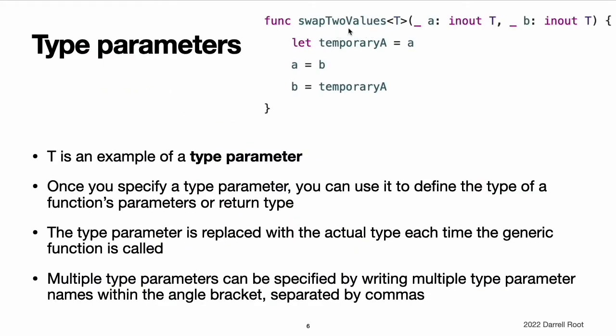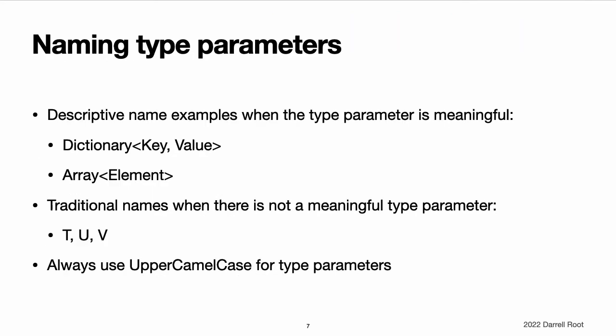Type parameters. In the swapToValues example, the placeholder type T is an example of a type parameter. Type parameters specify and name a placeholder type and are written immediately after the function's name between a pair of matching angle brackets. Once you specify a type parameter, you can use it to define the type of a function's parameters, such as the a and b parameters of the swapToValues function, or as the function's return type, or as a type annotation within the body of the function. In each case, the type parameter is replaced with an actual type whenever the function is called. In the swapToValues example, T was replaced with int the first time the function was called, and was replaced with string the second time it was called. You could provide more than one type parameter by writing multiple type parameter names within the angle brackets separated by commas.